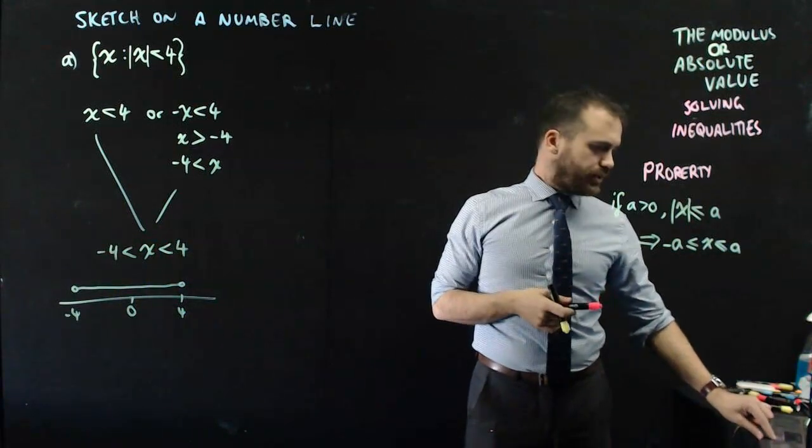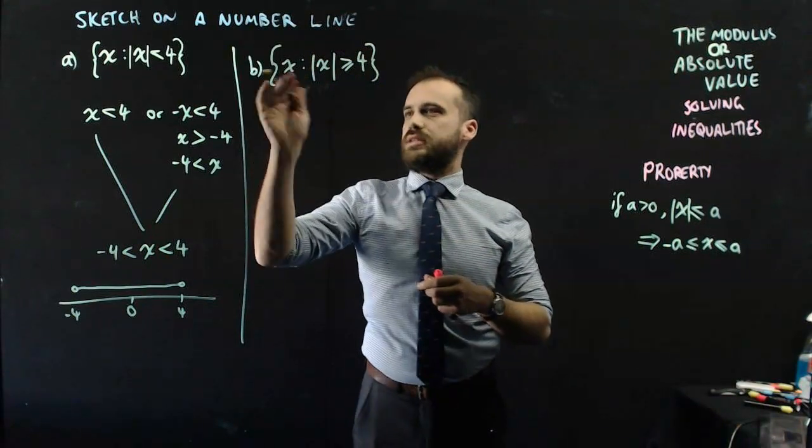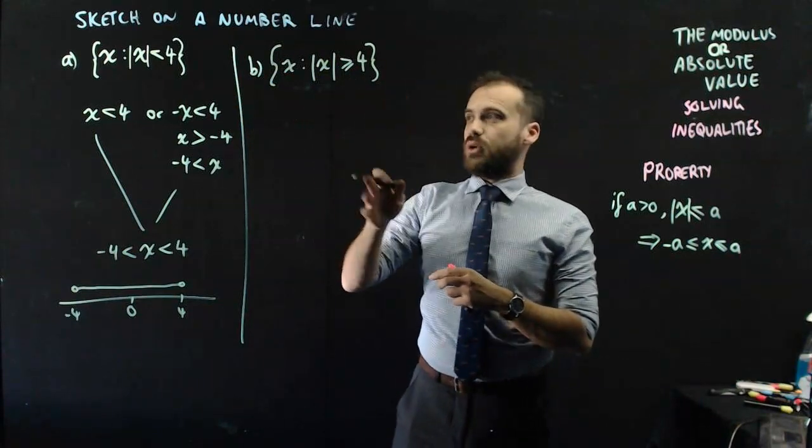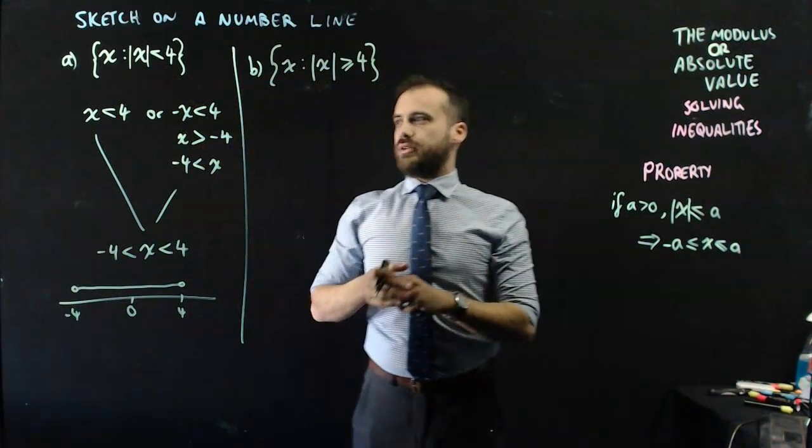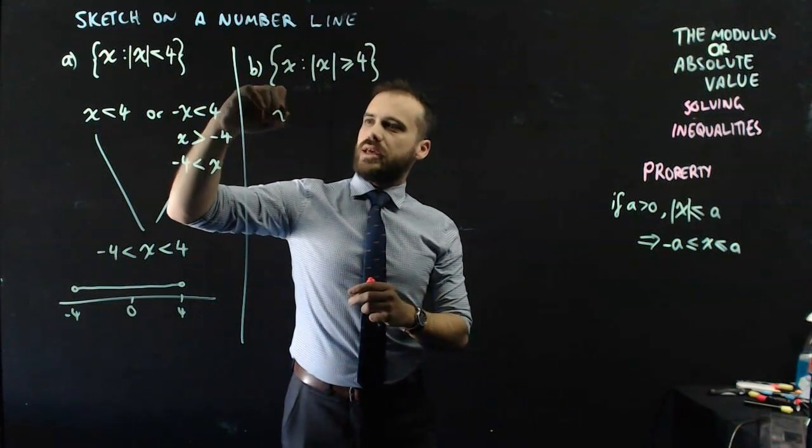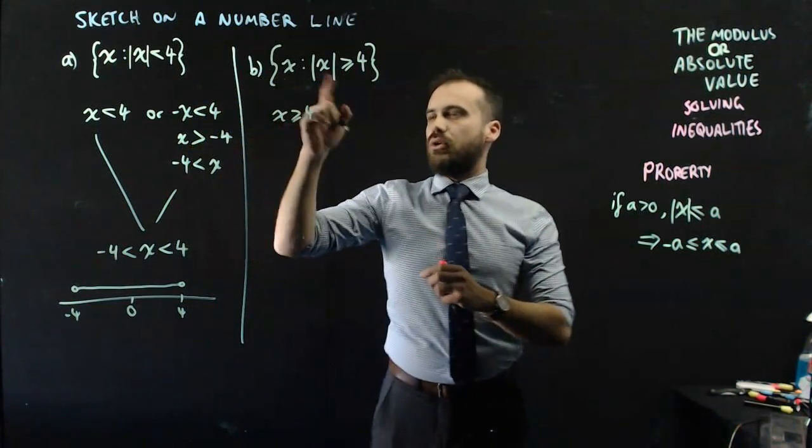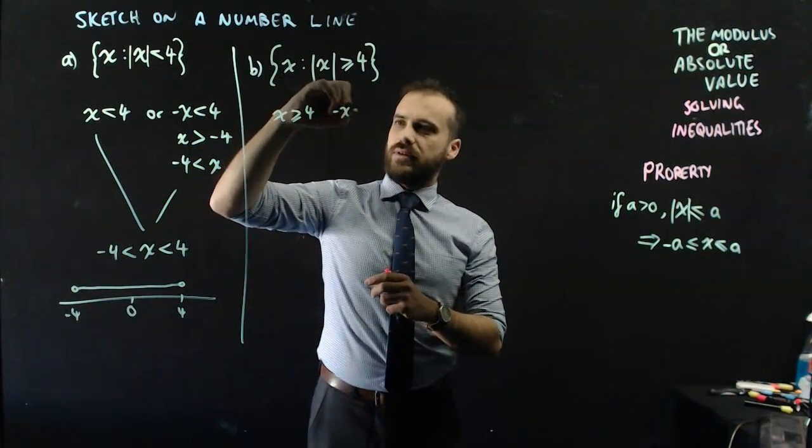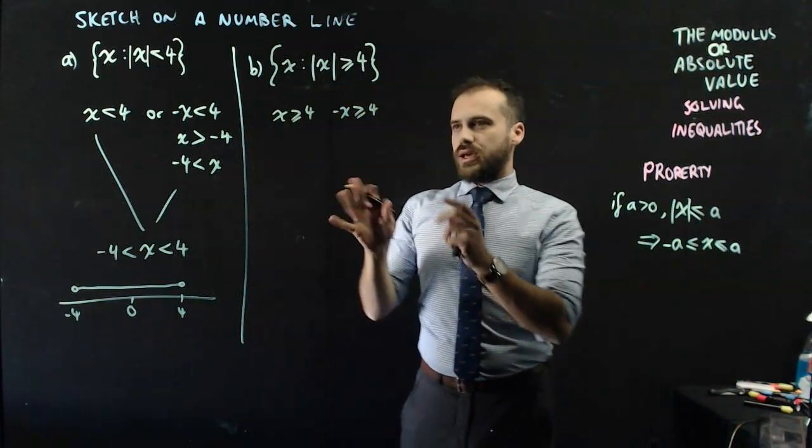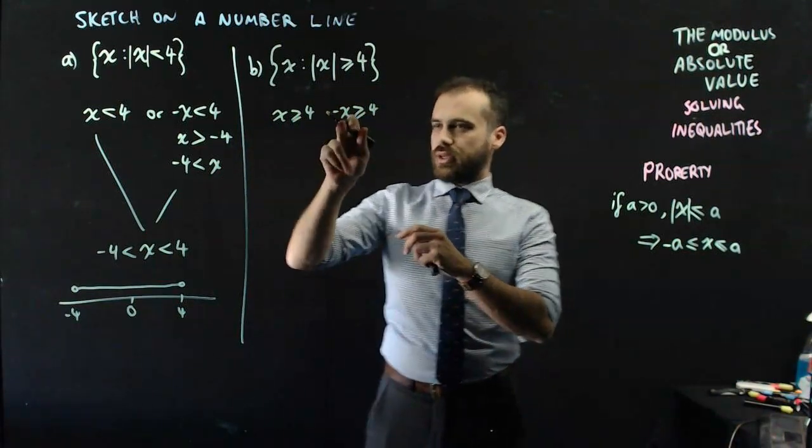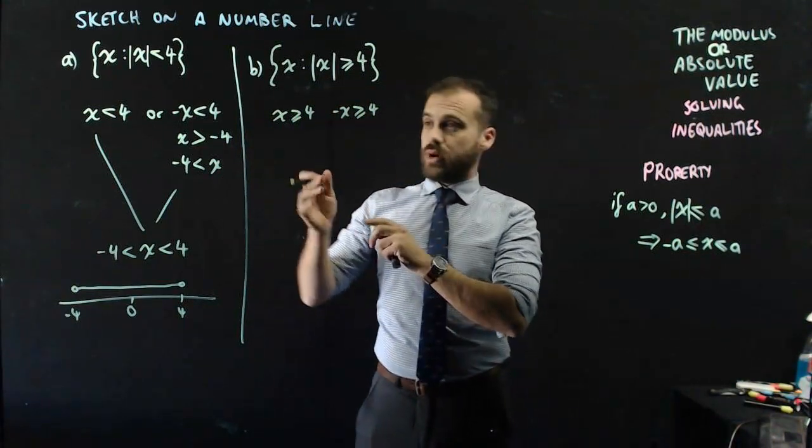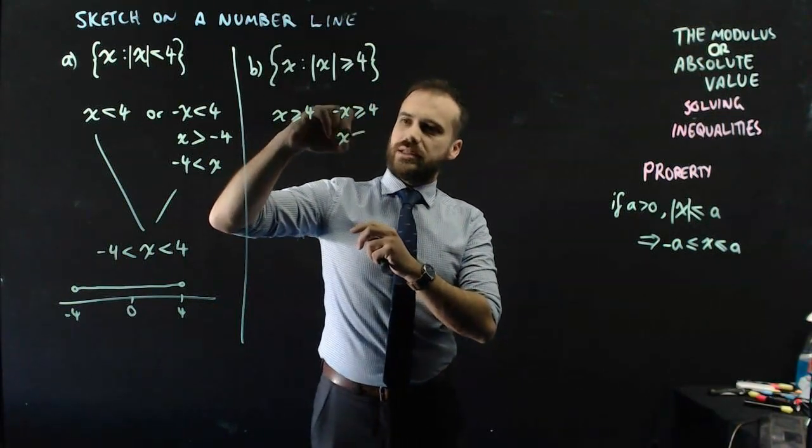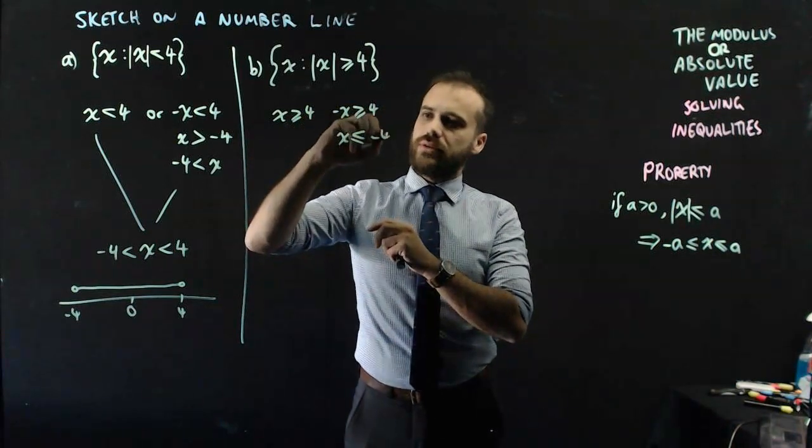Let's just jump into another one. What about this one here? x is in the set of absolute value of x is greater than or equal to 4. So just the same as this one, but kind of swapped around. We can say that that means that x is greater than or equal to 4, or we can say that that means that negative x is greater than or equal to 4. Now, that negative, if I multiply both sides by negative 1, this is self-explanatory, but this bit, x is less than or equal to negative 4.